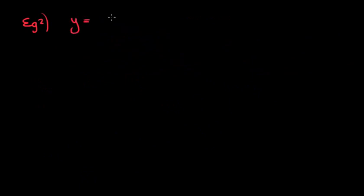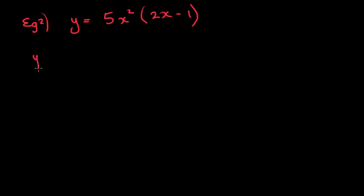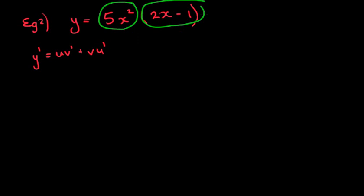So we're going to do another one. We're going to do y equals 5x² outside of (2x − 1). Again, I could multiply the brackets out, but we're going to use u·v' plus v·u', which is called the product rule, because you've got two different terms — the 5x² and the (2x − 1) — being multiplied together. That's why it's called the product rule.